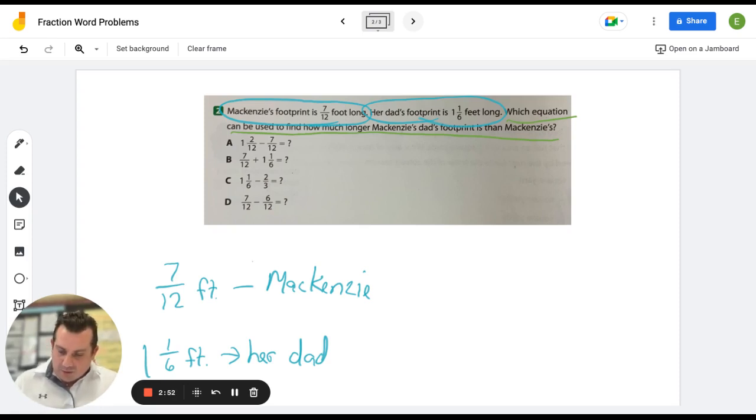Because when we see that how much longer, that's a clue word that's going to let me know that I'm comparing two amounts. And comparing the two amounts here is going to be the length of McKenzie's footprint and the length of her dad's footprint. And I'm going to have to subtract them because when you want to find out how much longer something is than something else, you're comparing two amounts and you're going to subtract.